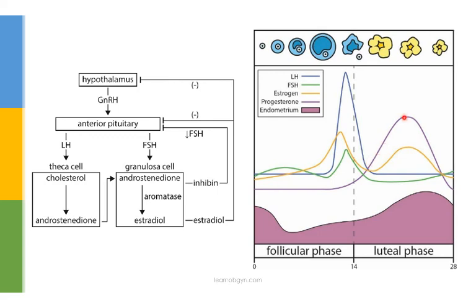The corpus luteum begins to secrete both estrogen and progesterone, allowing for maintenance of the endometrium. If the oocyte is fertilized and becomes a zygote, it will begin to secrete HCG, which has a similar structure to LH, and this sustains the corpus luteum. If pregnancy does not occur, the corpus luteum begins to die off, causing a decrease in progesterone. Without progesterone to maintain the endometrium, it will begin to slough off and menses begins again. The luteal phase length depends on how long the corpus luteum lasts — most last about 14 days. If a patient has irregular cycles, what's changing is the follicular phase length; the luteal phase is consistently 14 days.